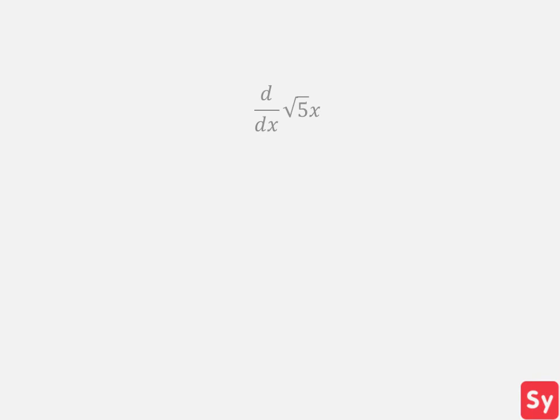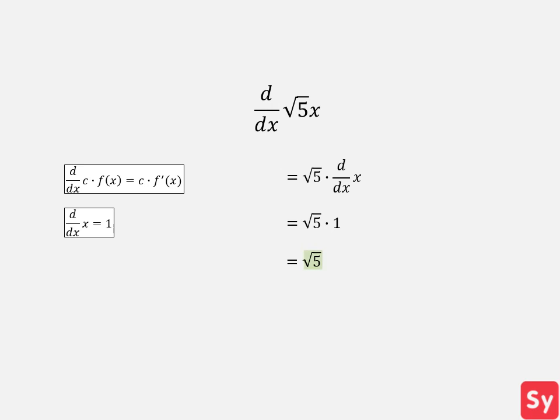Last example. We want to compute the derivative of the square root of 5 times x. We can use the multiplication by a constant rule to solve this. This equals the square root of 5 times the derivative of x, which equals the square root of 5 times 1, simplified to the square root of 5, our answer.